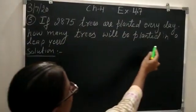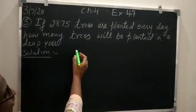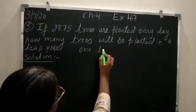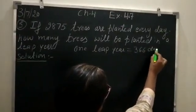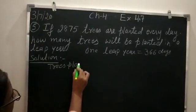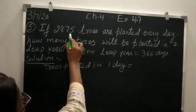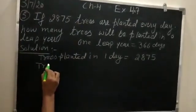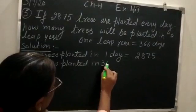You will find out the trees planted in a leap year, that is in 366 days. So, first of all, you will write down one leap year is equal to 366 days. Now, write down the statement. Trees planted in one leap, that is 2875. Trees planted in 366 days.